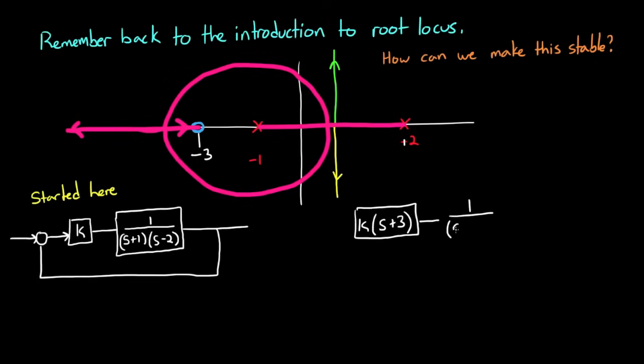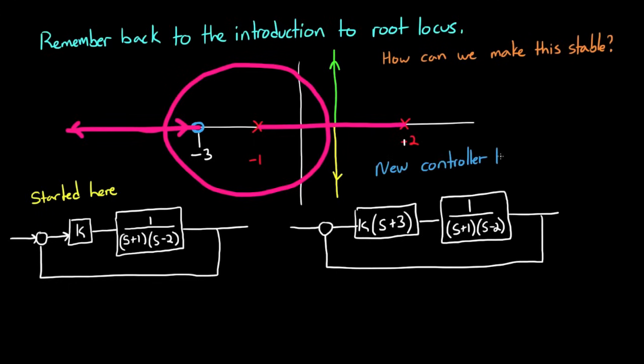But really what we've done is we've taken this closed loop system that had proportional feedback, and added a real zero to the controller to make it look more like this system. But the interesting thing about that is that that controller now has a proportional component, k times 3, and a derivative component, k times s. So really what we've done is we've created a PD controller to stabilize this system. But we did it all in the s domain.